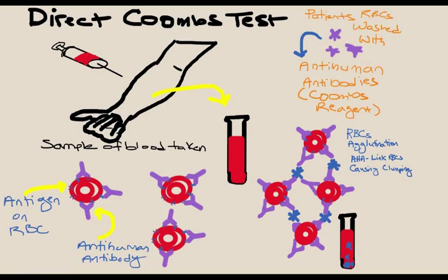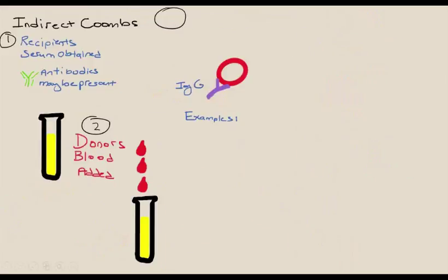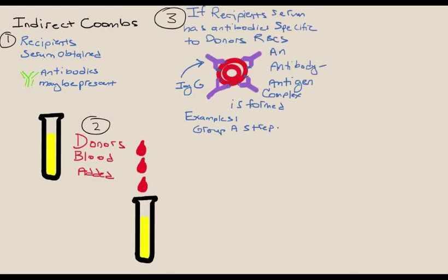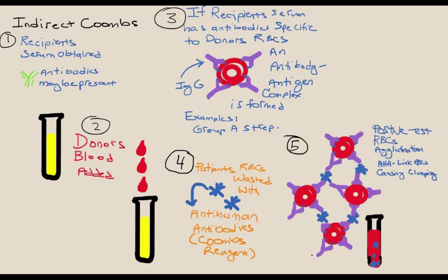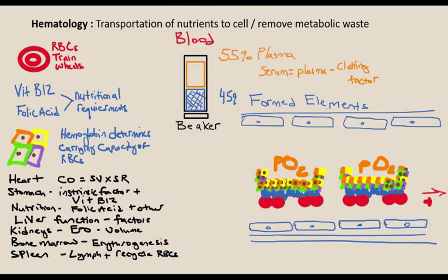With the indirect Coombs test, the recipient serum is obtained, red blood cells are removed, and donor blood is added. If the recipient serum has antibodies specific for those red blood cells, they'll attach. The same Coombs reagent is added, and if antibodies are present, they clump together. In direct and indirect Coombs tests, we're looking at specific red blood cells versus antibodies present in the patient's serum.